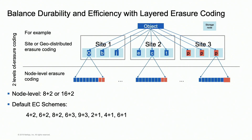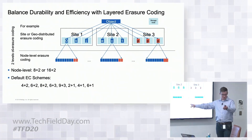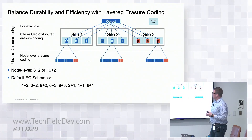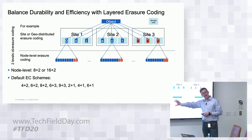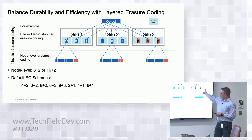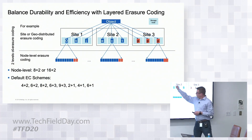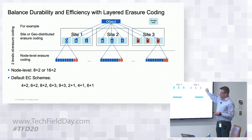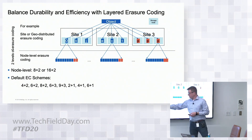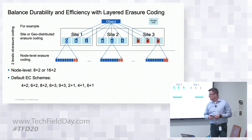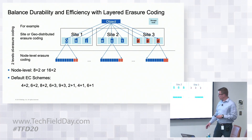Let's talk about how we do data protection — we're doing what we call layered erasure coding. On our appliance, we're doing DDP, a feature of E-Series under the covers. When I want to erasure code an object, I'm protecting it at the software level and also at the hardware level. Here I'm protecting my object with a 6+3 scheme across three sites, putting every single chunk on a unique storage node. Within those storage nodes, I'm protecting them with node-level erasure coding — either an 8+2 or 16+2 scheme depending on the number of disks. This provides a better level of resilience and more efficient software schemes.